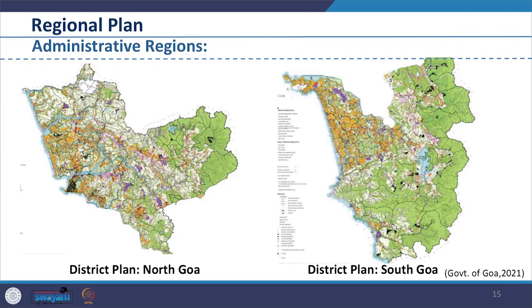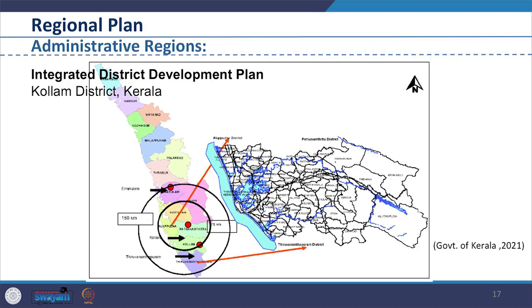For example, we can see the Goa Regional Plan 2021, which is a state-level regional plan prepared based on the two districts plan of North Goa and South Goa. We are looking at the image of North Goa and South Goa extracted from the Goa Regional Plan.